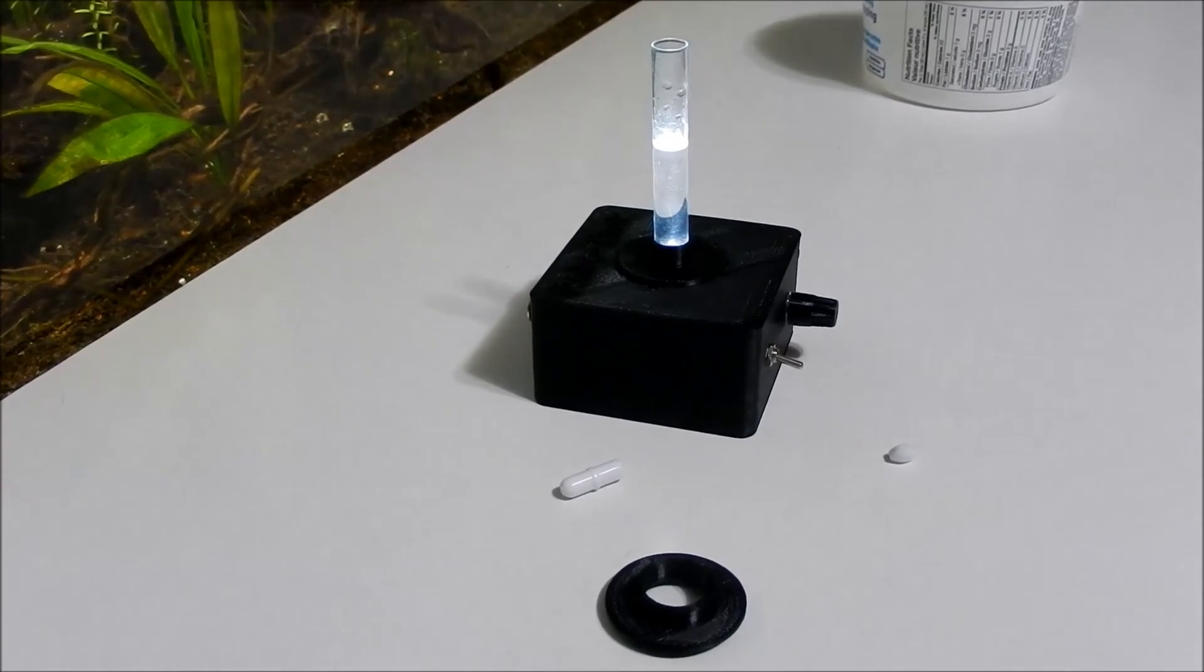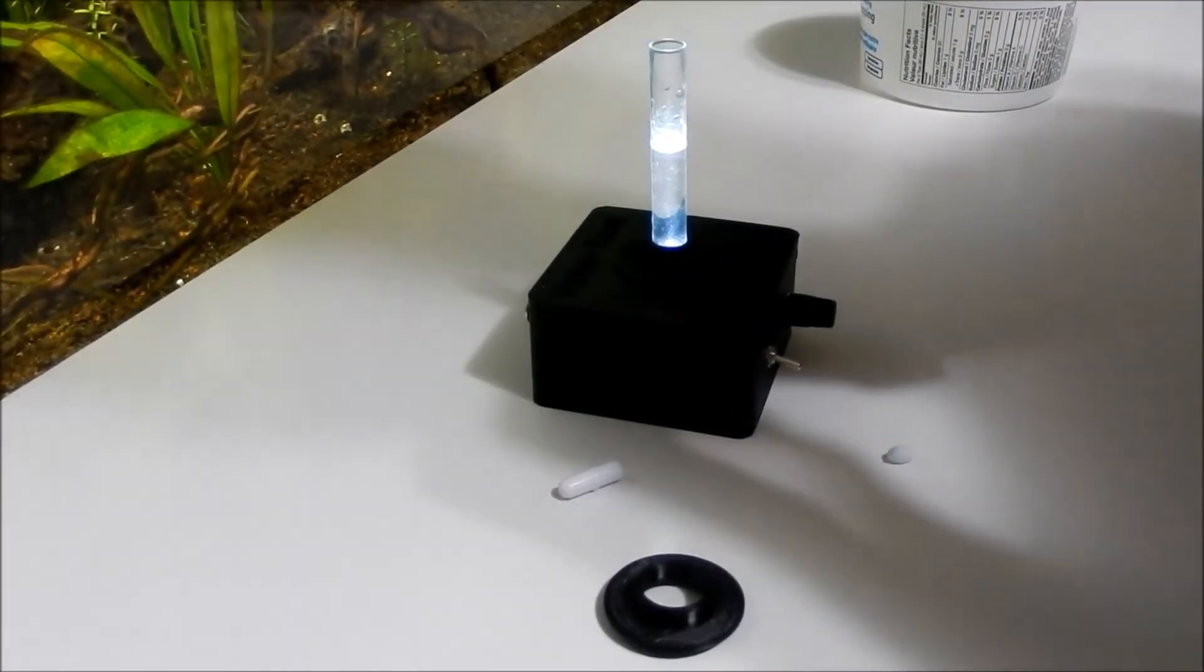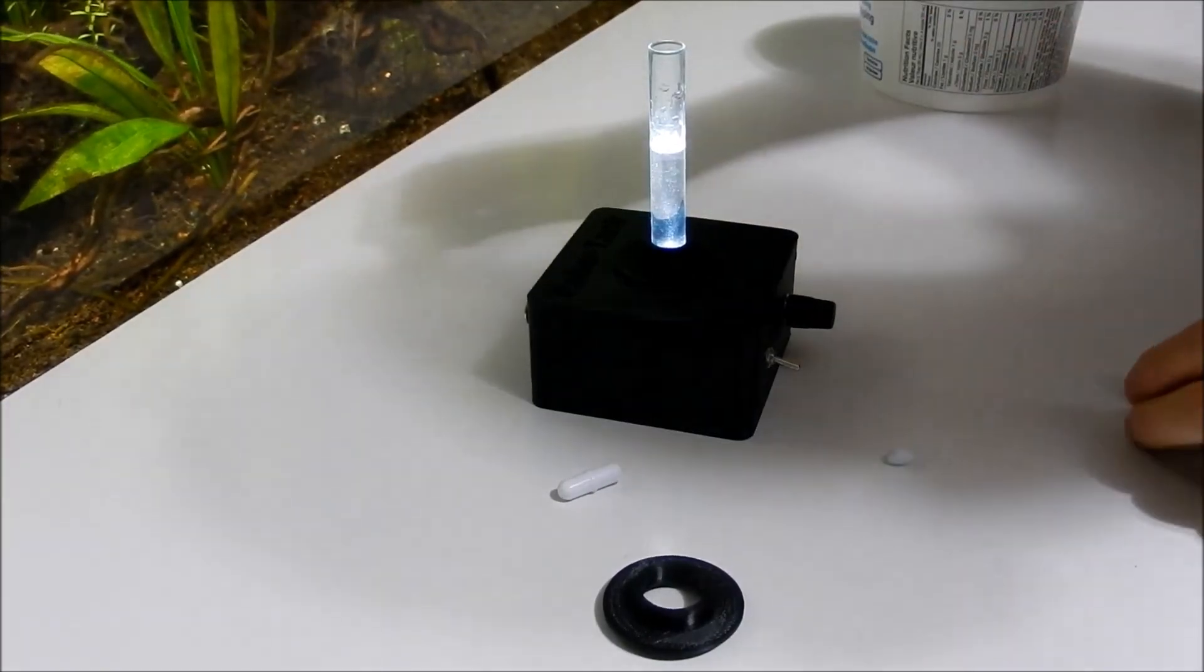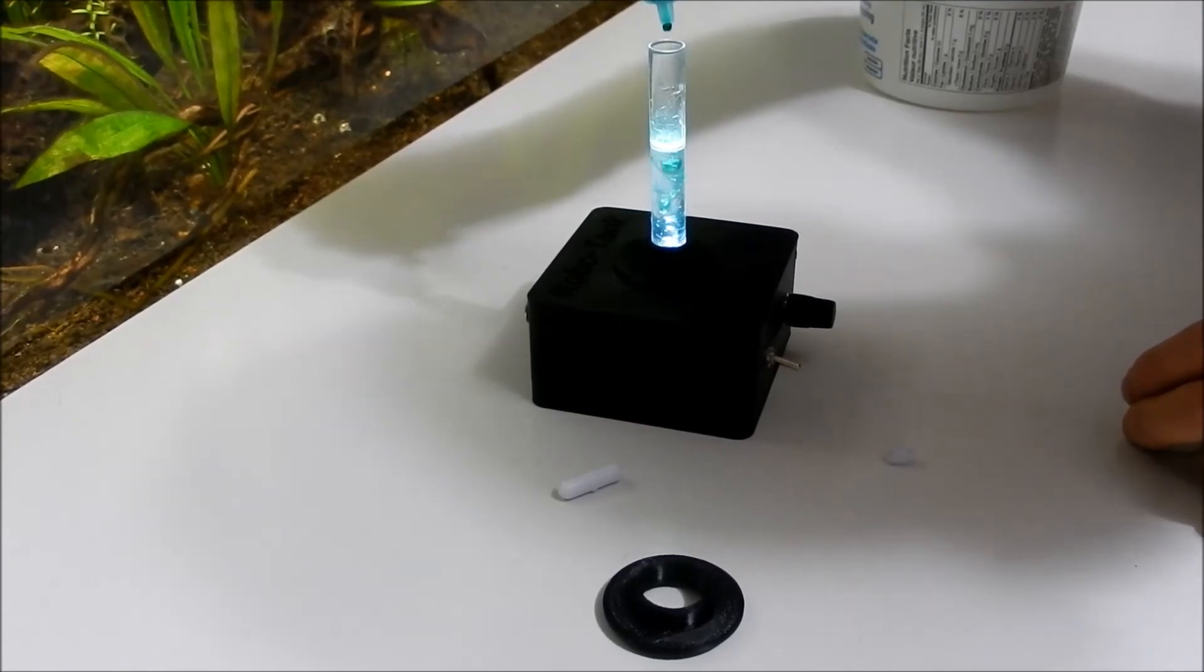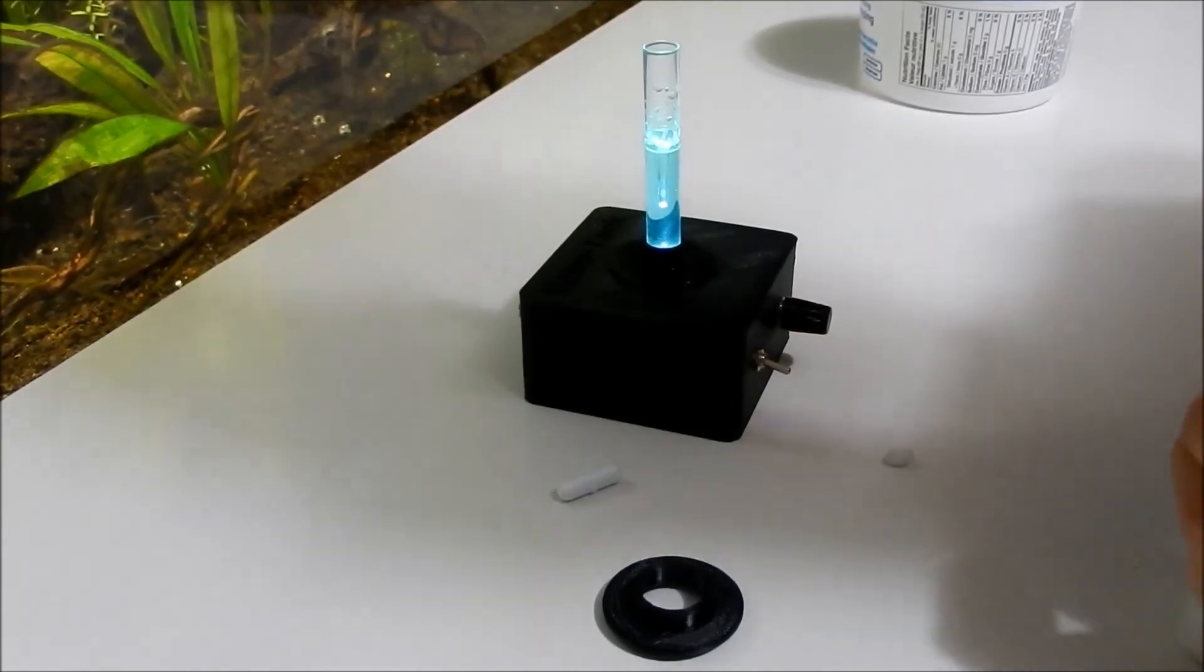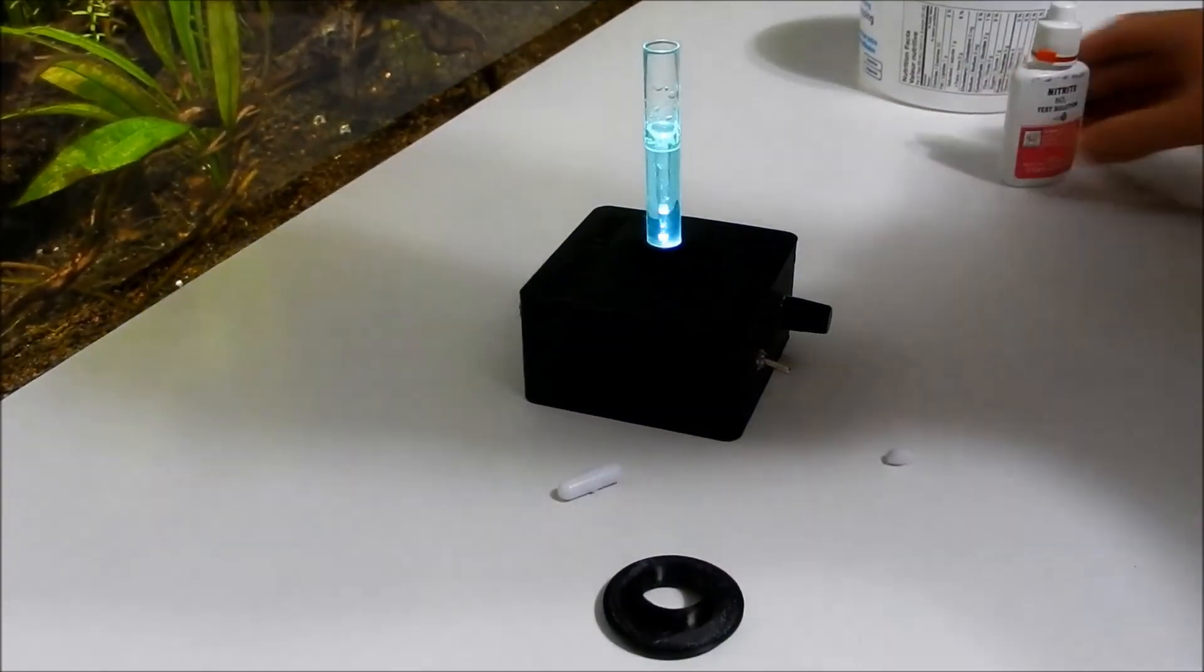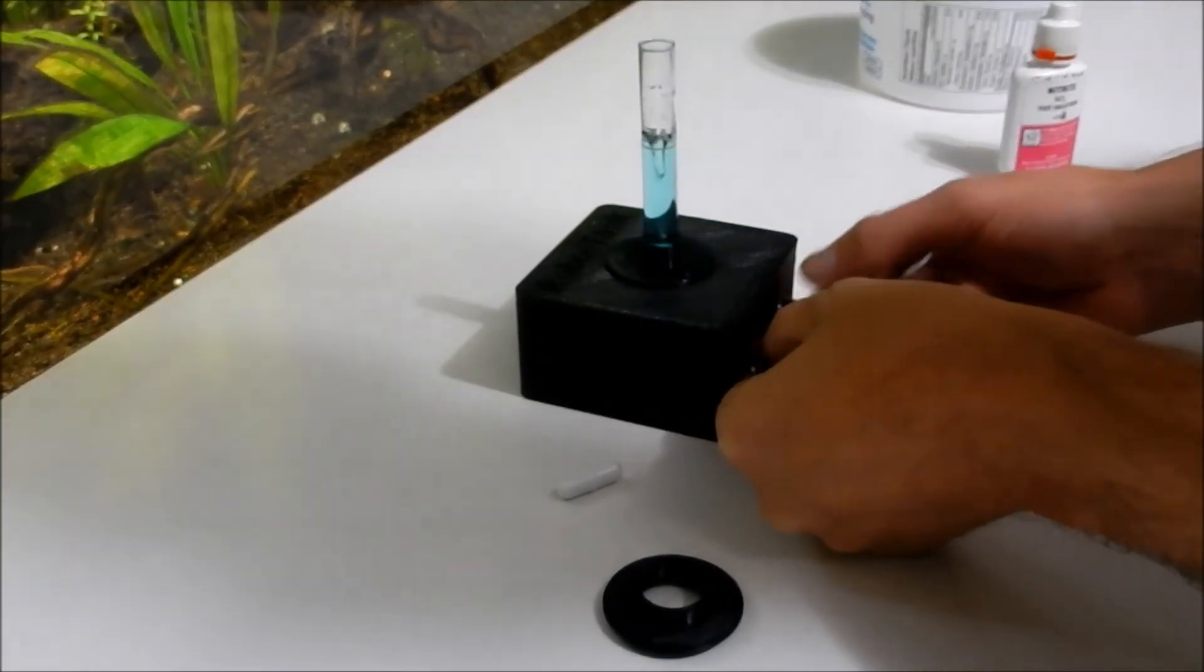We'll just grab some solution here. Now this is just tap water. So we're doing our test. 1, 2, 3, 4, 5 let's say. Let it stir. And you can see a nice colour in there. So you can compare it to your colour chart that you get with the kit. And you know what's going on with your tank.